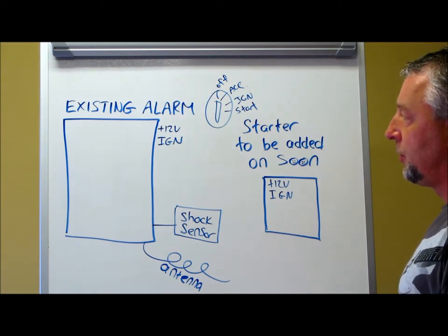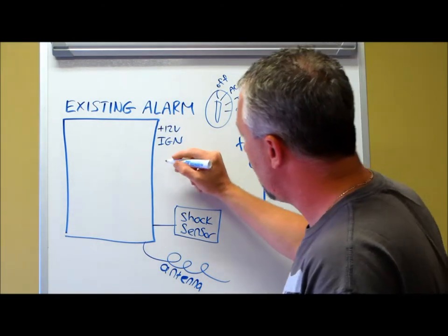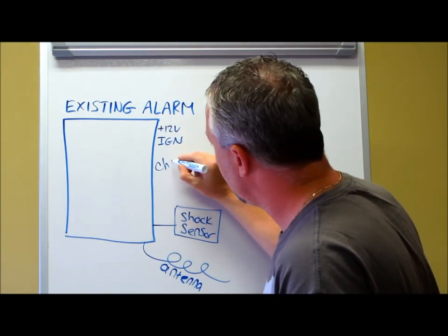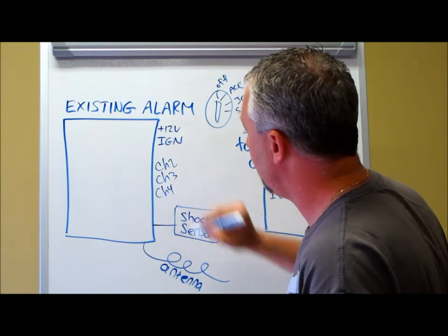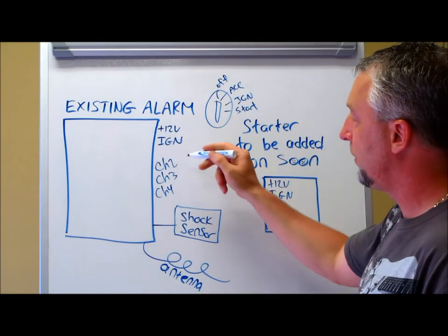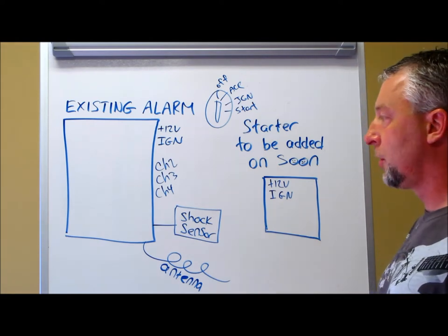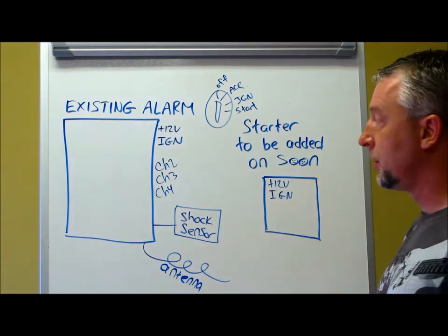Now, some of the stuff is not so complicated. On your existing alarm, you're going to have multiple outputs besides what's the bare necessity for locking and unlocking. You're going to have channel two, three, and four. Any decent alarm system is at least going to have channel two to pop your trunk release. So that's going to throw a negative output, right?